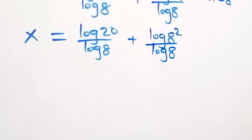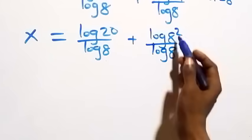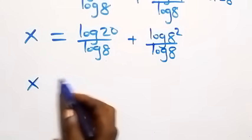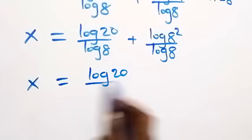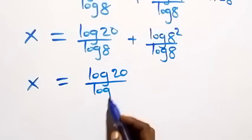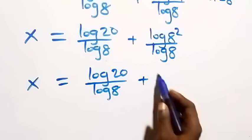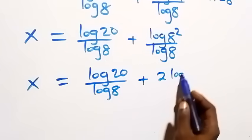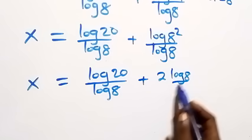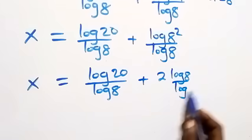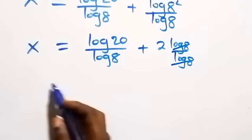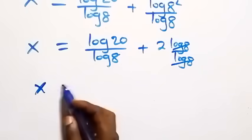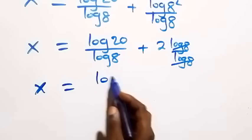Applying the power rule of logarithms, x equals log 20 over log 8, plus 2 times log 8 over log 8. The log 8 terms cancel, leaving 2, so we have x equals log 20 over log 8, plus 2.